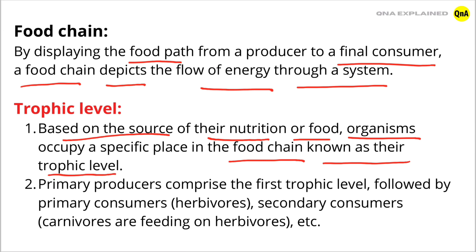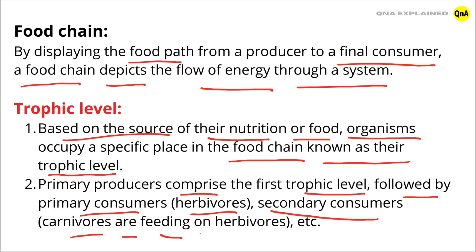Primary Producers comprise the first trophic level, followed by the primary consumers — herbivores — then secondary consumers, carnivores feeding on herbivores, etc.